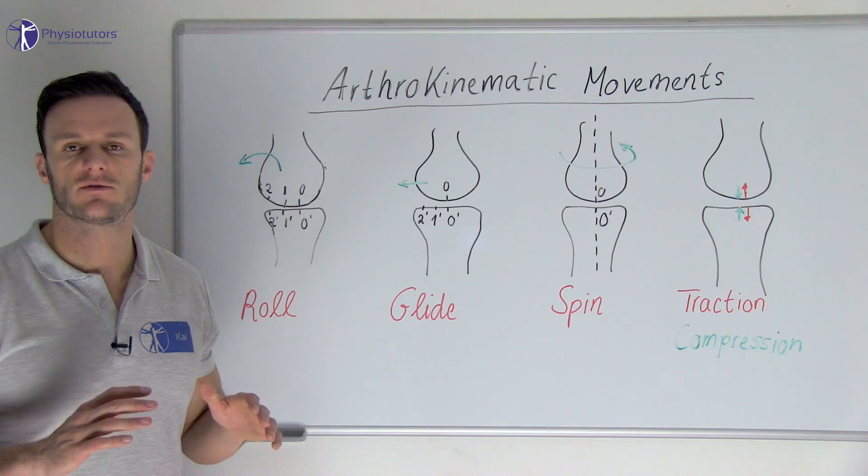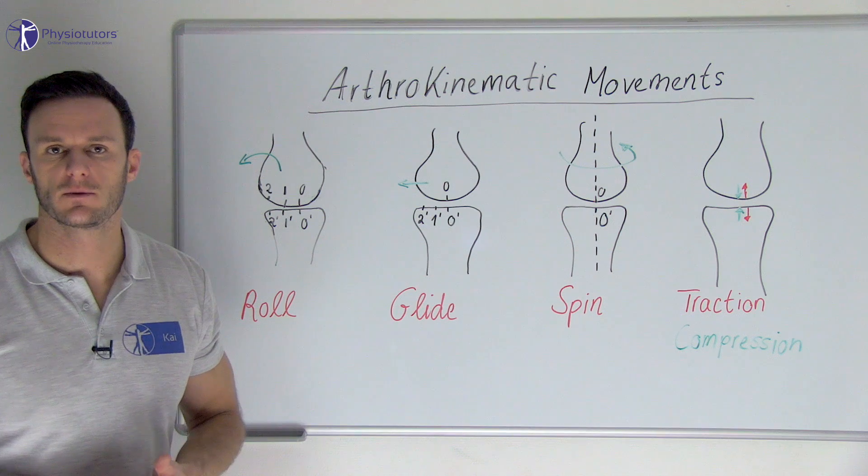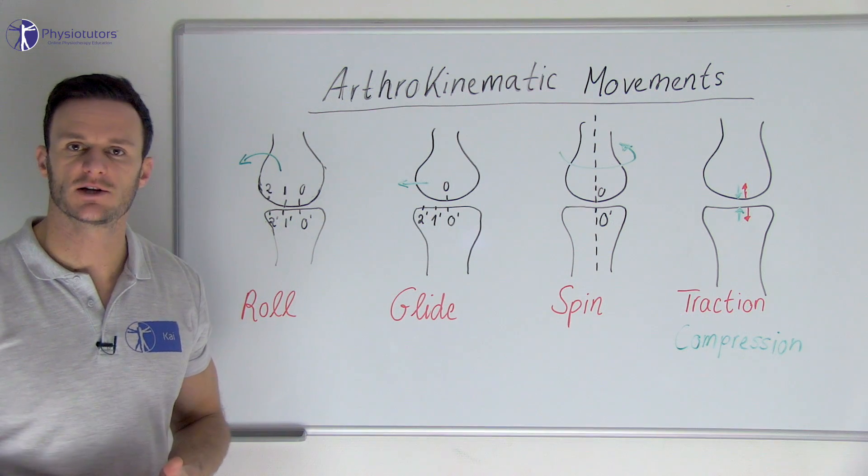In arthrokinematics, we are talking about combined movements of rotations and translations which are further specified as spin, roll and glide as well as traction and compression.